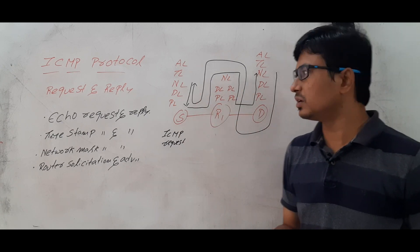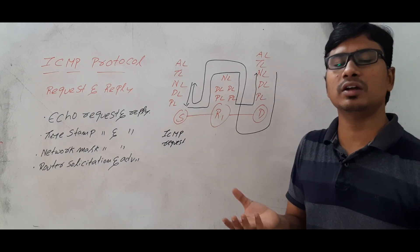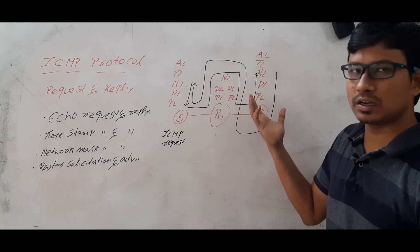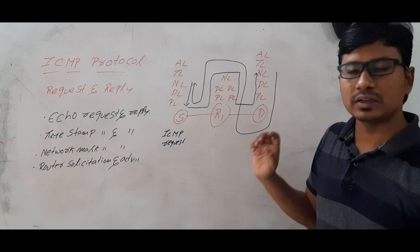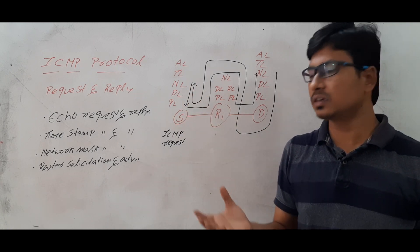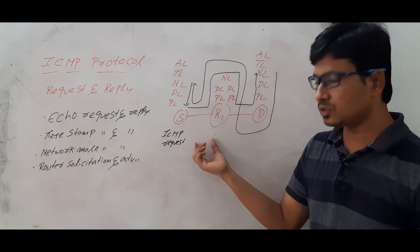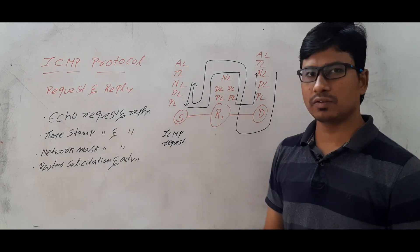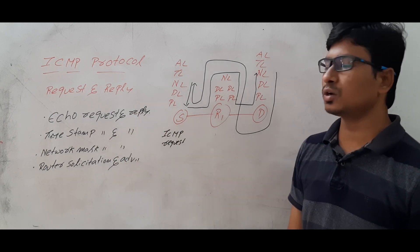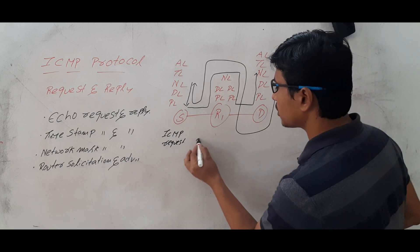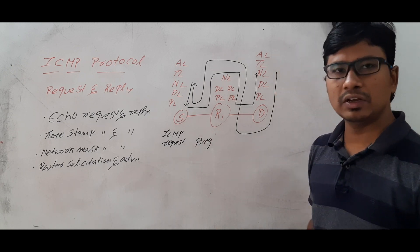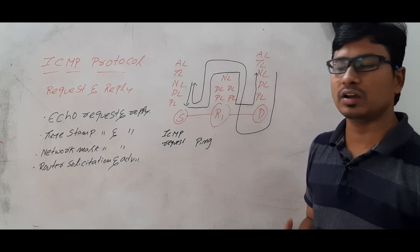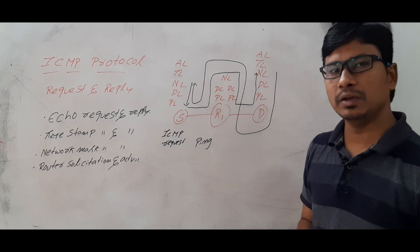This is useful to check whether the destination is switched on or not, because the packet goes up to the network layer. If a reply comes, you can understand that the router can send packets, the router is working, and the destination is switched on. That is why we use the echo request and reply packet. Using this, we have a protocol called ping, which gives proper information about whether the destination is available and whether the routers are working.